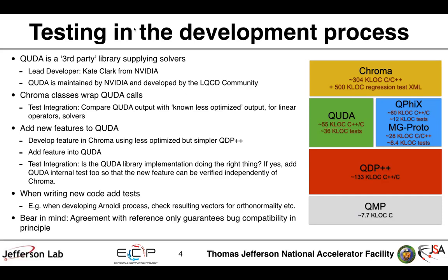Nowadays when I write new code I always try to immediately add tests. For example, when writing a solver with an Arnoldi sub-process, I add little tests to check resulting vectors for orthonormality and similar properties. One important thing to bear in mind: if you're testing against a reference, you're only guaranteeing compatibility with that reference, so you should be happy that your reference is doing what you want first before you use it as a reference.